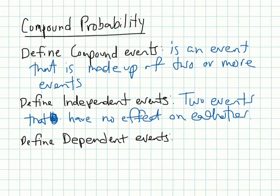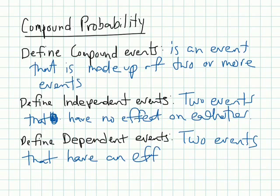Let's define dependent events. Dependent events are two events that do have an effect on each other. So, how could an event have effect on each other? Well, let's say that, let's look at our next page and there'll be an example there.